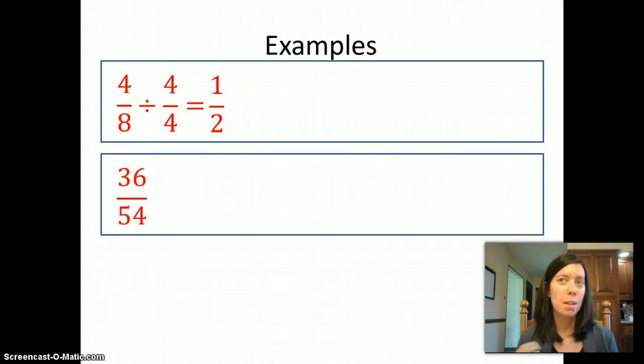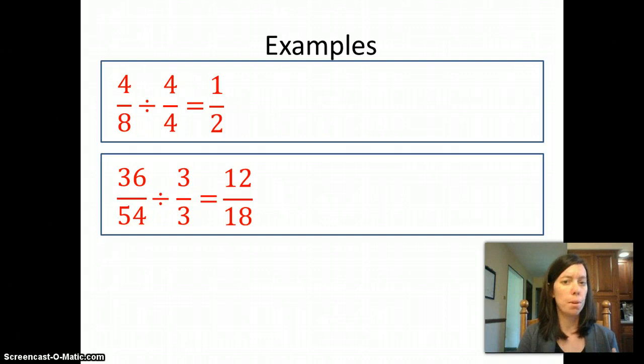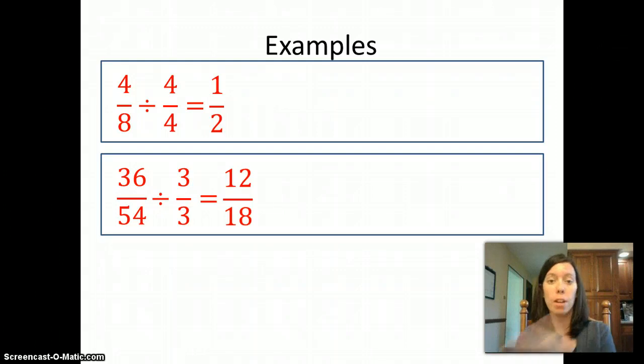But suppose I make a mistake or I miss the highest number and I start with 3. I think 3 goes into both. So I divide both by 3 and I get 12 over 18. When I look at that answer, I can think of another number that goes into both 12 and 18. So this is not lowest terms. That's okay. I don't need to go back to the beginning. I can just go from here and move forward.